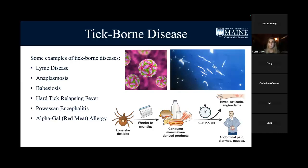In our lab we test for most of these diseases from black-legged ticks and dog ticks — except for alpha-gal syndrome, which is an allergy. Black-legged ticks transmit Lyme disease, anaplasmosis, and babesiosis. We also test for hard tick relapsing fever and Powassan virus in both black-legged and dog ticks. Dog ticks transmit other pathogens but do not transmit Lyme disease, anaplasmosis, or babesiosis — those are only found in black-legged ticks.